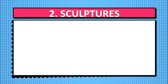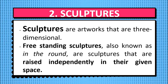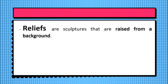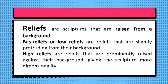The next topic is Sculptures. Sculptures are three-dimensional artworks. There are two traditional classifications of sculptures: Freestanding and Relief. Freestanding sculptures, also known as in-the-round, are sculptures that stand independently in their own space and can be observed from all points of view. Reliefs are sculptures raised from a background. Depending on the figure's distance from the background, they can be classified as Bas-relief (Low Relief), which slightly protrudes from the background, or High Relief, which is prominently raised against the background, giving the sculpture more dimensionality.